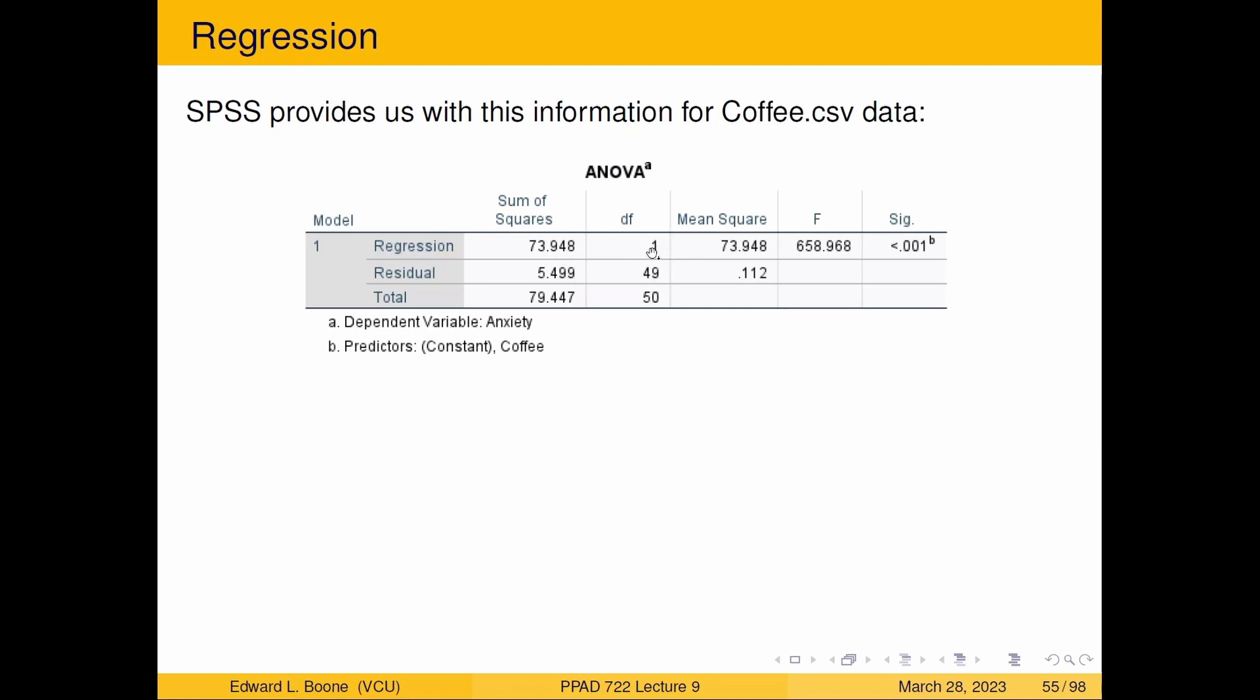Our degrees of freedom in the case of the coffee is one, because we only have one predictor in there, which happened to be coffee, the amount of coffee per week. And you can see that we had an overall 51 observation. So 51 minus one minus one is equal to 49. And to get to the mean square, remember you would take your sum of squares regression and divide it by the degrees of freedom. Well, it's one in this case. So that's easy here. We would take 5.499, which is our sum of squares error. We're going to divide it by its degrees of freedom and come up with 0.112.